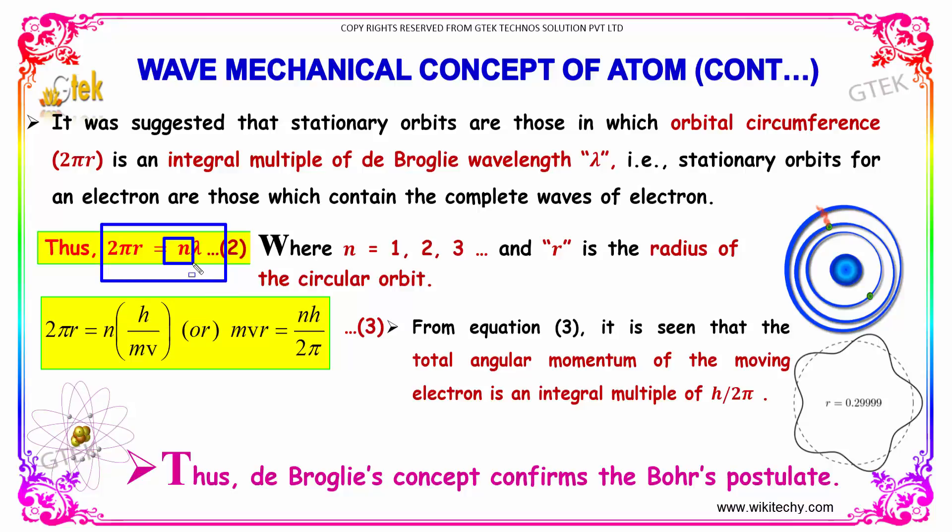Here, n is 1, 2, 3... representing the orbit, and r is the radius of the orbit. Replacing λ with h/mv, you will get 2πr = n·h/mv, or mvr = nh/2π.